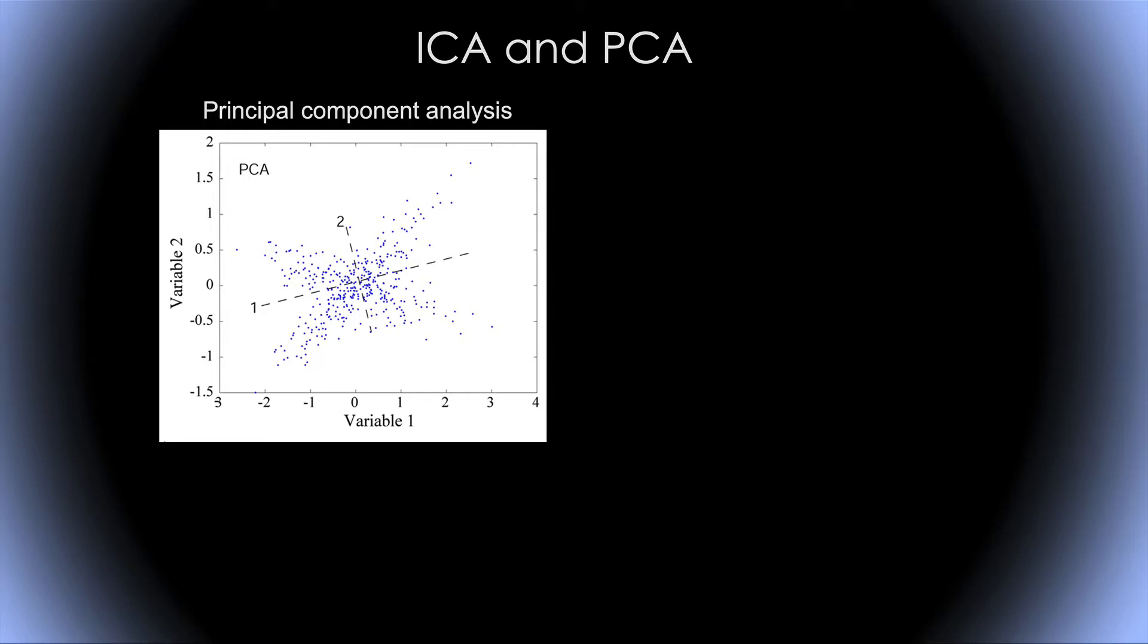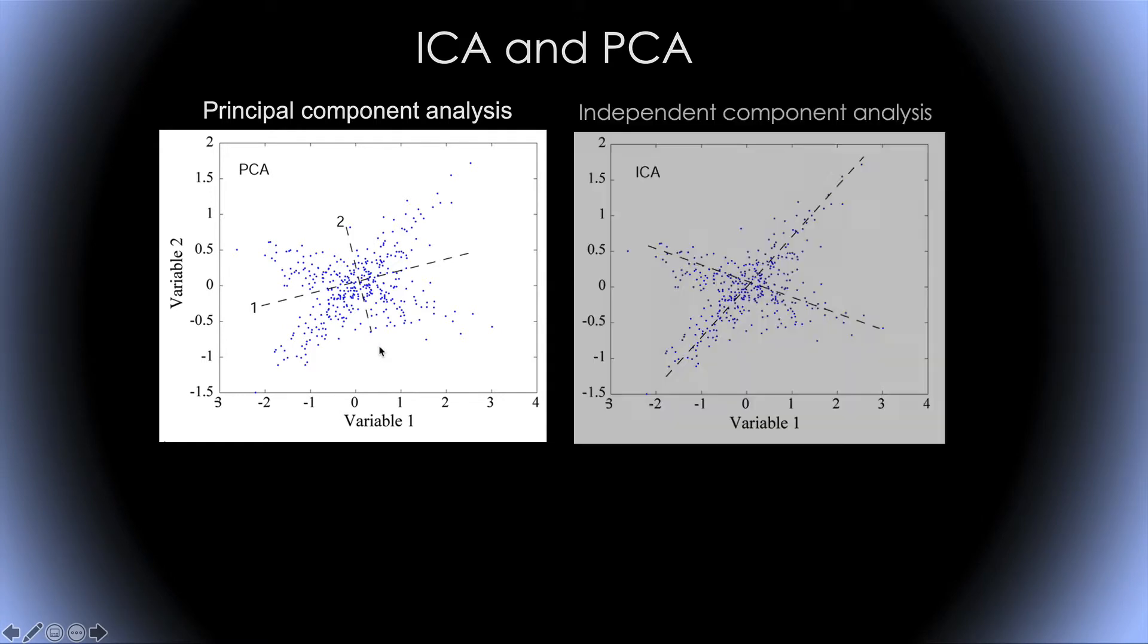What PCA is going to find is the axis along which the projection of the data on this axis has maximum variance. So the first axis is going to be along this direction, and the second axis is going to be perpendicular to the first axis. ICA by contrast is going to find the projection of the data points that maximize independence. So it's going to find the axis along which the data is maximally independent.